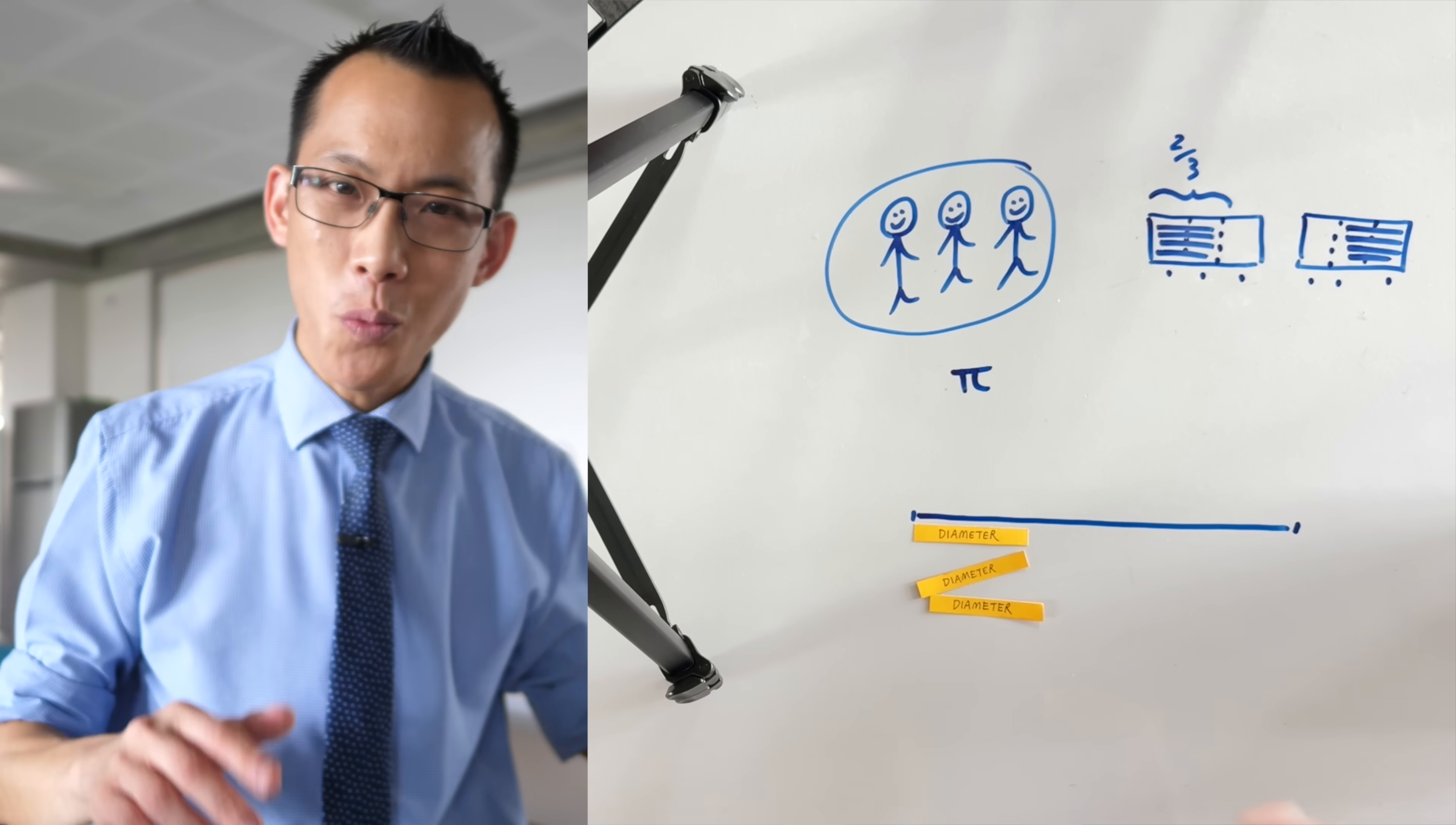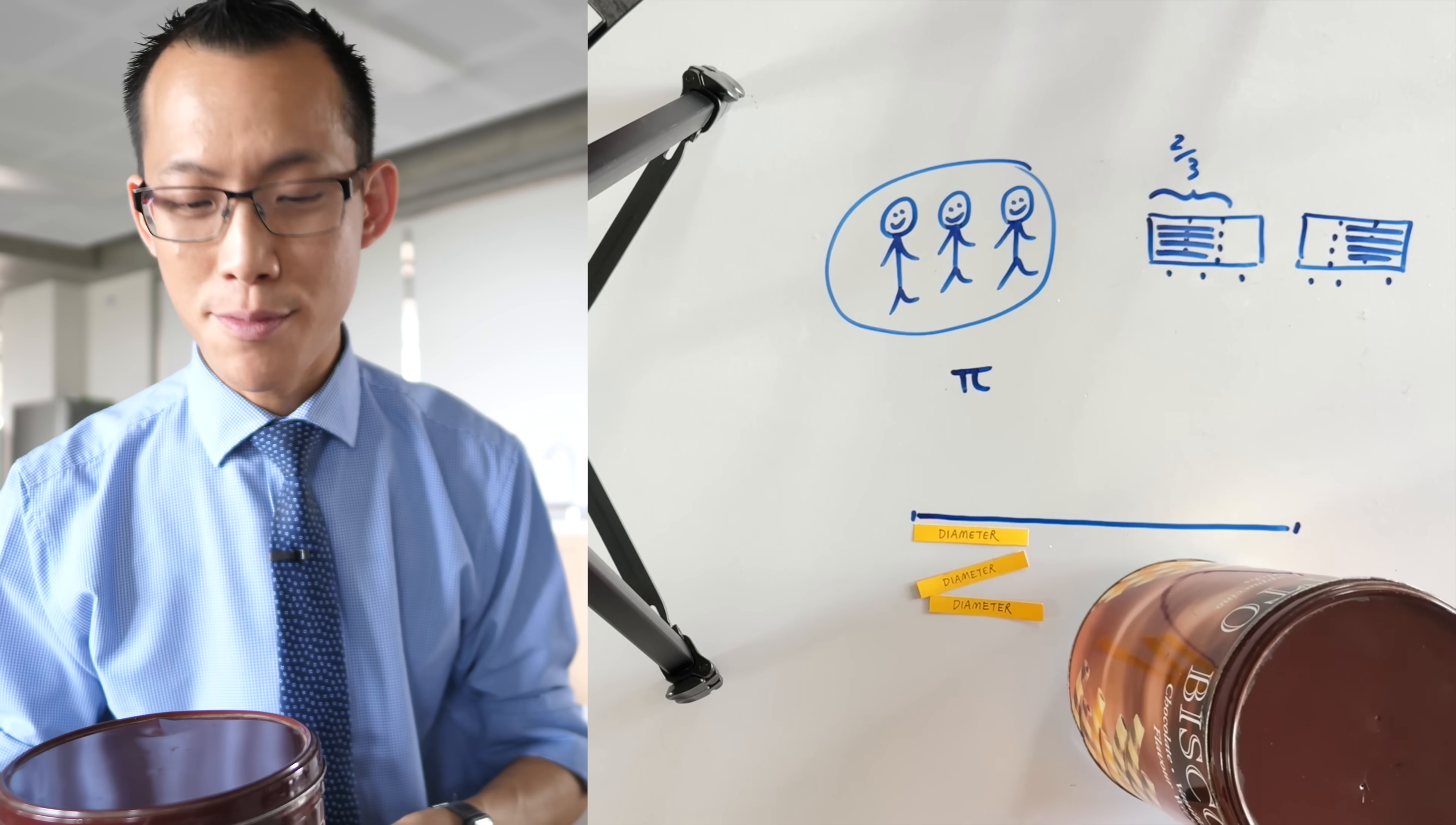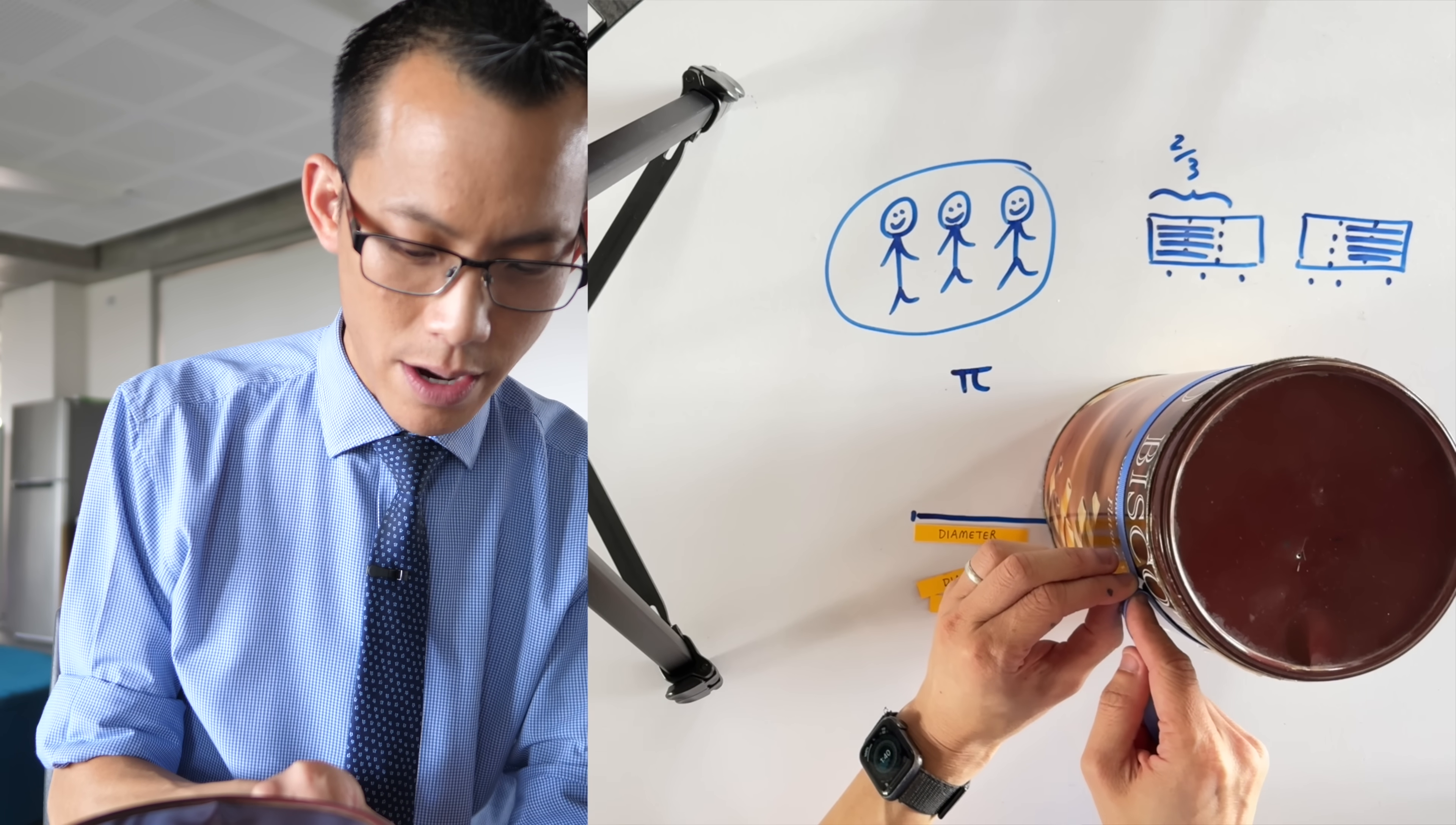Now what's wild is that this actually isn't just particular, this three and a bit relationship, it's not just particular to this circle here. I've got a much larger circle here, it's actually from a tin of biscuits, and I can do much the same thing. Let's put it here, and then I use the same ribbon, and I will wrap it around, and this is where it stops.